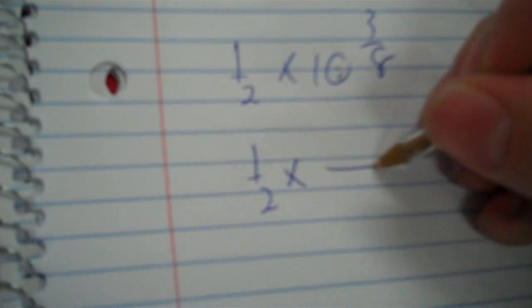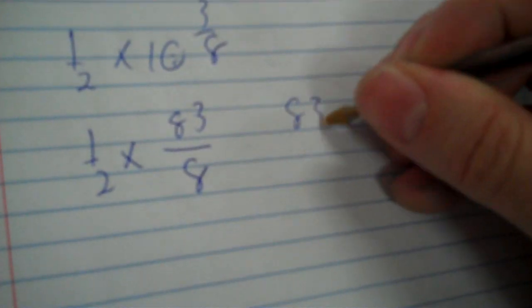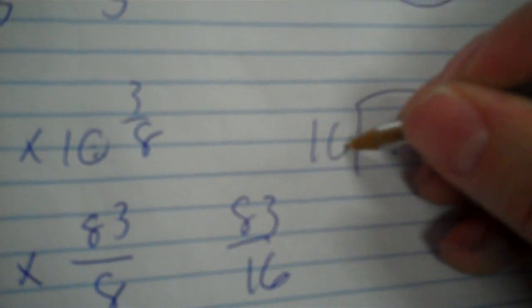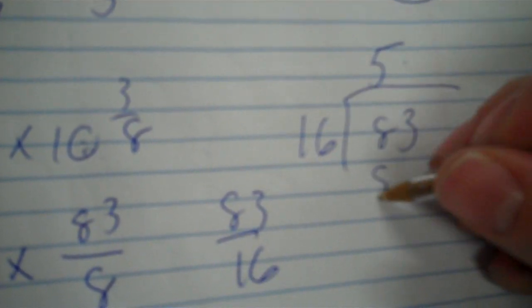1 half times 10 and 3 eighths. Now, when multiplying, since we need to multiply the tops and the bottoms, that 10 can't be there. You need to rewrite that as an improper fraction. So, over 8, 80 plus 3 is 83, 10 times 8. 83 and 2, 83 and 8. No. So, this was 83 over 16. 16 goes into 83 five times. Times 6, it's 80 with a remainder of 3. So, 5 and 3 sixteenths.